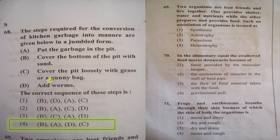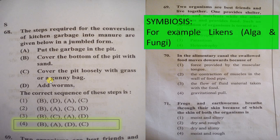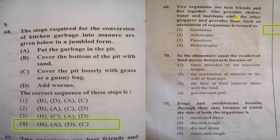The next question presents a definition of symbiosis: two organisms live together, one provides shelter, water, and nutrients while the other prepares and provides food. Such an association is termed symbiosis. An example is the mutualistic relationship between algae and fungi — algae photosynthetically provide synthesized food while fungi provide shelter for the algae.